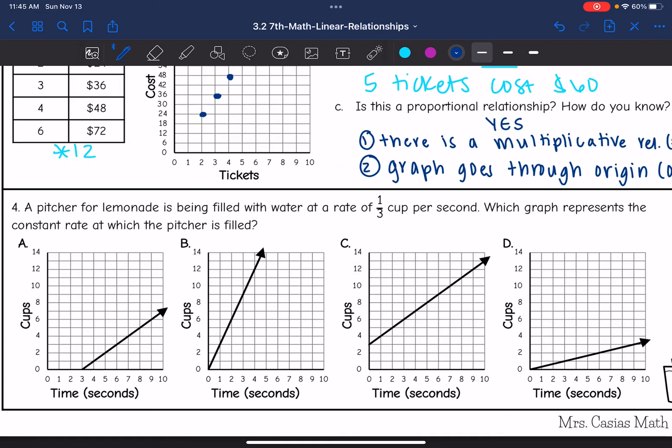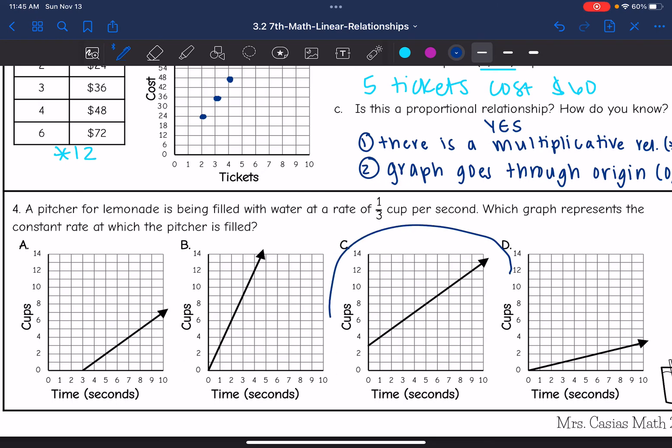So there's two that I can go ahead and eliminate because I see that they're not proportional relationships. And I know that it's going to be proportional because I'm just given this rate of one third cup per second.